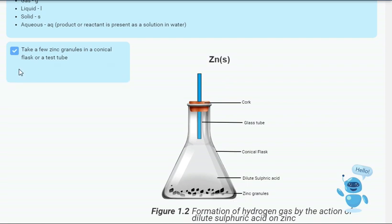Select the second check box to add dilute hydrochloric acid or sulphuric acid to this. In this activity we are taking sulphuric acid.